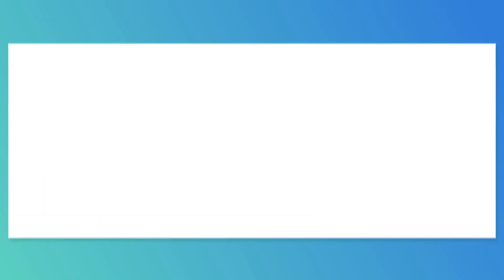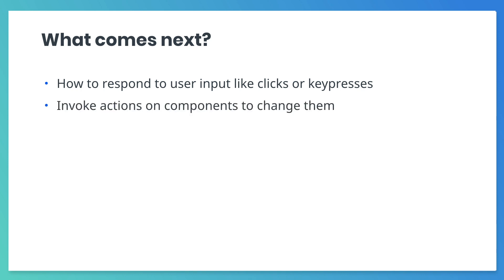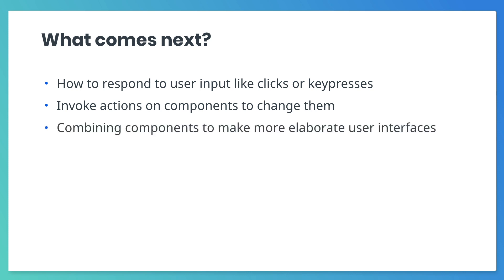In our next course, we'll learn how to respond to user input like clicks or key presses, how to invoke actions on an AMP component to change its state or appearance, and how to combine multiple AMP components to make more elaborate user interfaces. We'll continue to expand on Chico's Cheese Bikes Shop, so Chico's can continue to impress potential cheese-loving cyclists.